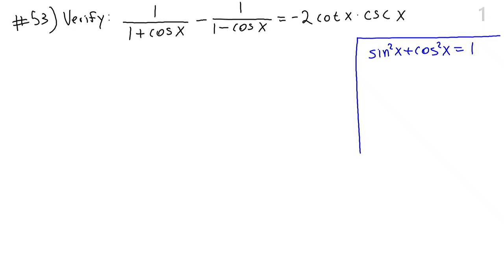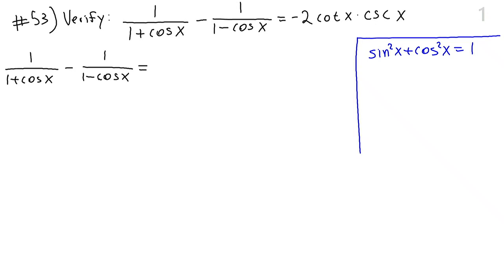There's no unique way of doing this — there are many different ways to verify a trigonometric identity. We want to verify that the left-hand side equals the right-hand side. Usually it's preferable to start with the harder side. In this case we have two rational expressions with trig functions that have different denominators, so we want to rewrite them over the same denominator.